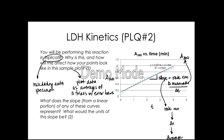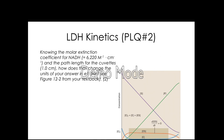What does the slope from the linear portion of these curves represent? The slope represents the rate of the reaction. The units of the slope are the change in absorbance at 340 over time. Since absorbance units are unitless, we'll have units of either reciprocal seconds or reciprocal minutes, depending on how you plot time. Knowing that the molar extinction coefficient for NADH is 6,220 M⁻¹cm⁻¹ and the path length is 1 cm, how does that change the units?